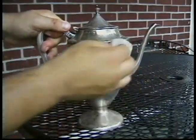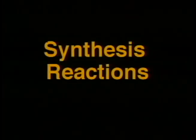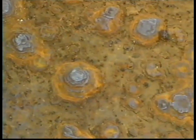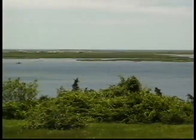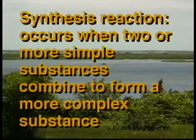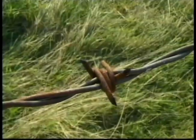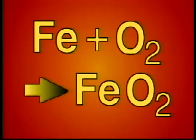Now that we have explored how to balance chemical equations, let's take a look at four different types of chemical reactions. You probably have seen an orange coloring covering metal objects like this large iron step. This orange substance is referred to as rust, and it represents a reaction between the metal iron and the oxygen found in the air. The combining of iron and oxygen is an example of a synthesis reaction — a reaction that occurs when two or more simple substances combine to form a more complex substance. The chemical equation for rusting is: Fe reacts with oxygen to form FeO2, or iron oxide.